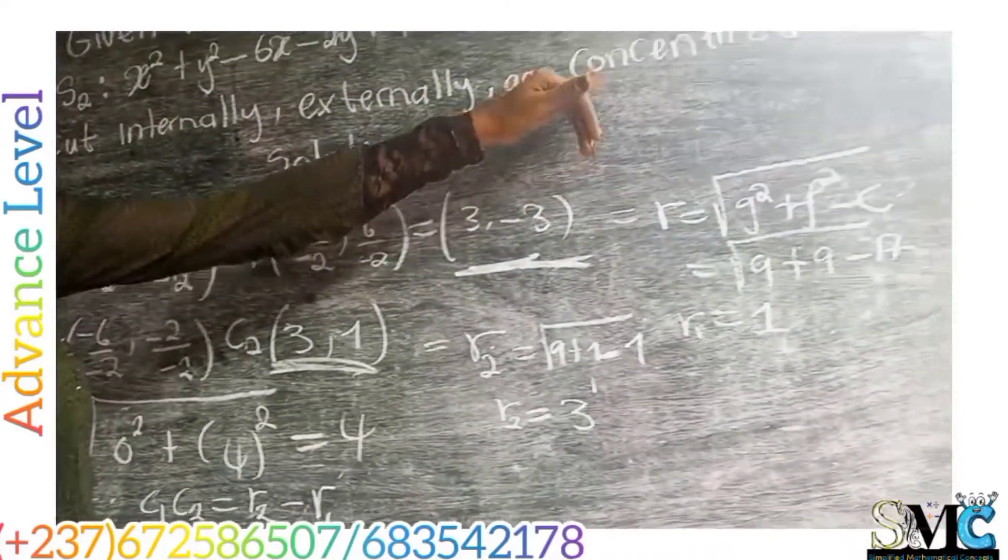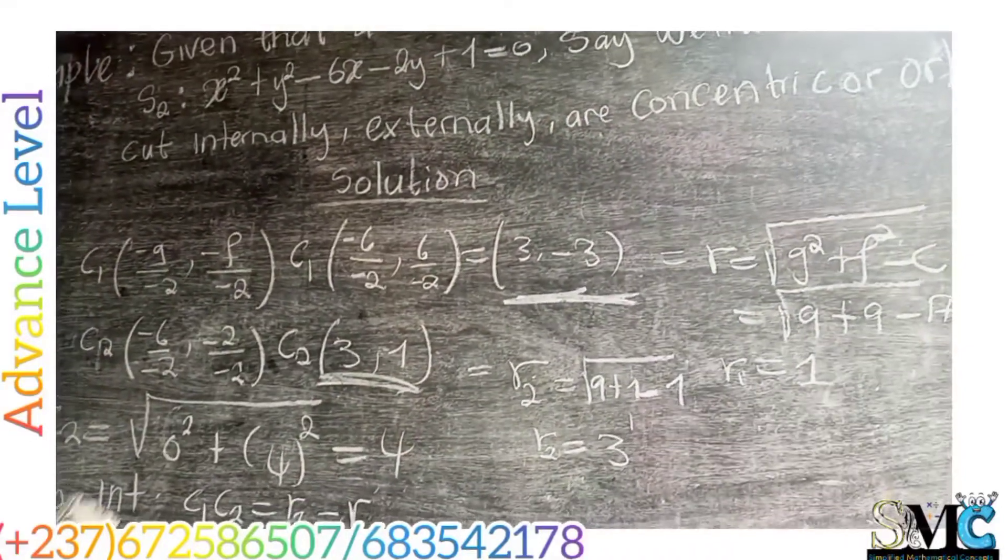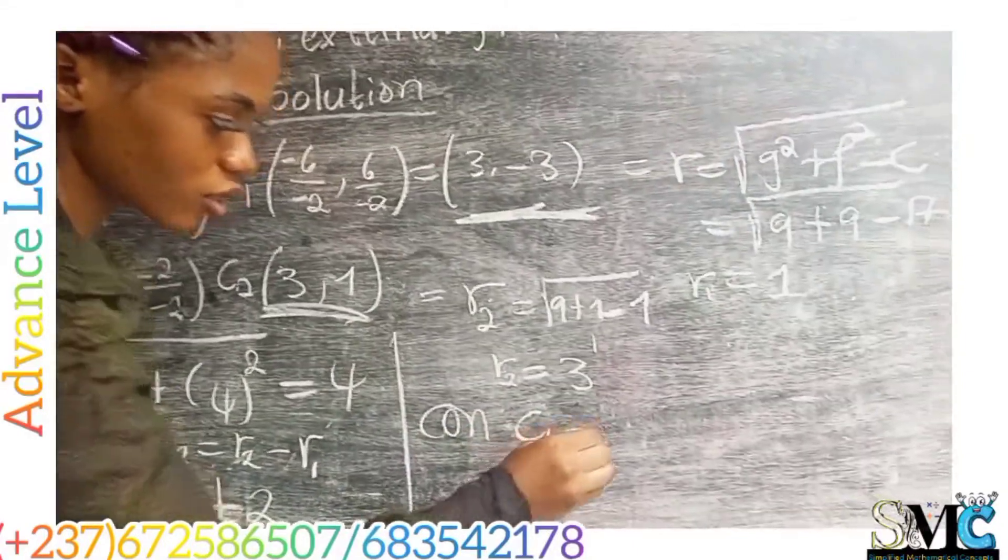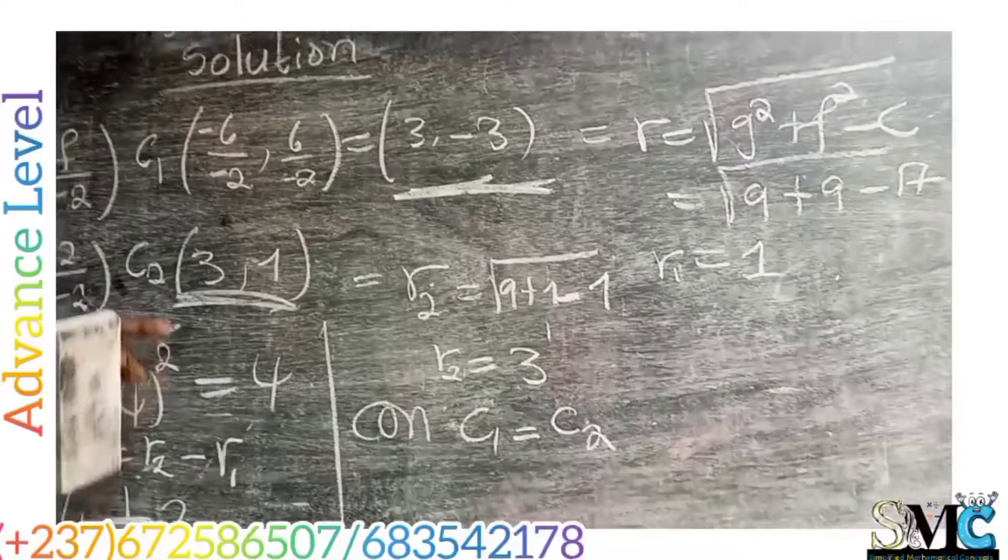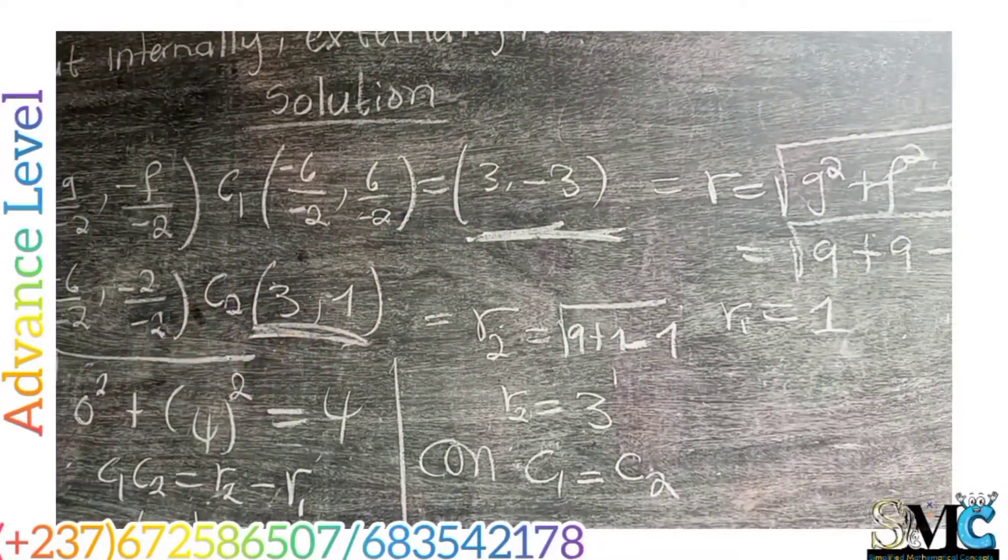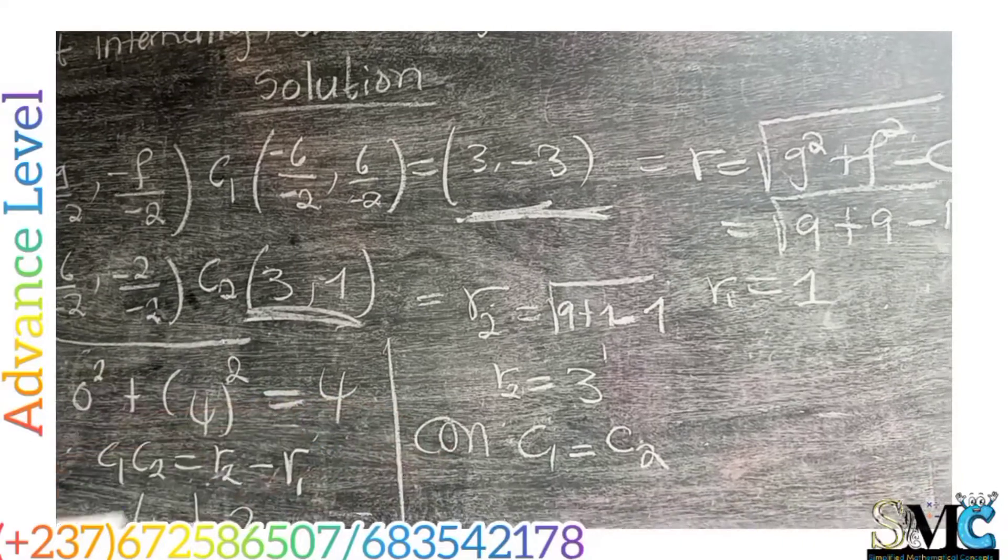If the two circles are concentric, then our C1, the concentric circles, C1 is equal to C2. But if you look at this, C1 is not equal to C2, so the two circles are not concentric.